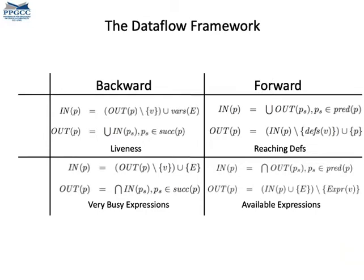Let's see. The columns indicate the direction in which the information flows. The two analyses on the left propagate information backwardly. This means that the information flows in the direction that is opposite to the edges of the control flow graph, and the two analyses on the right propagate information forwardly, meaning along the same directions of the edges of the control flow graph.